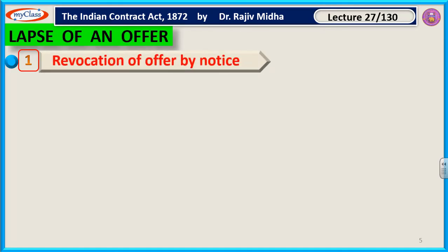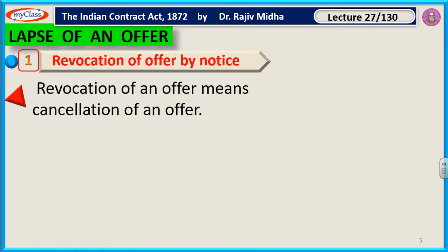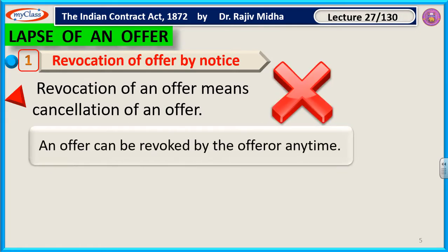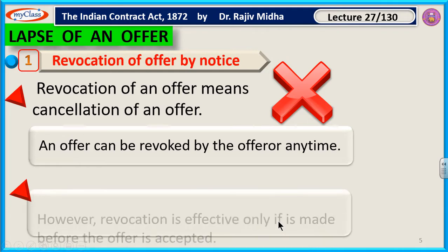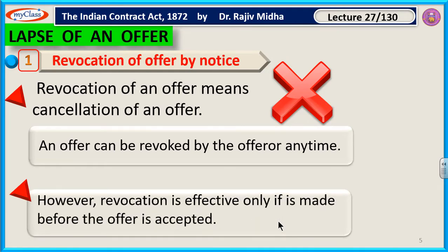The first one is revocation of an offer, means cancellation of an offer. An offer can be revoked by the offerer anytime — revoked means cancel. However, revocation is effective only if it is made before the offer is accepted.